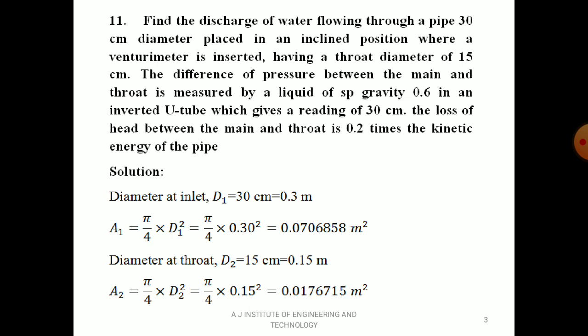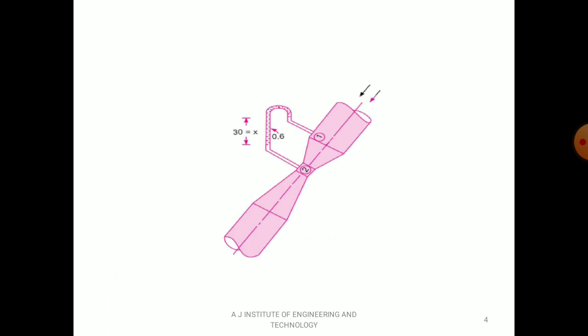Similarly, diameter at throat D₂ = 15 cm = 0.15 m. A₂ = π/4 × (0.15)² = 0.0176715 m². Those are the cross-sectional areas of pipe and throat. This is the diagram you are supposed to draw.